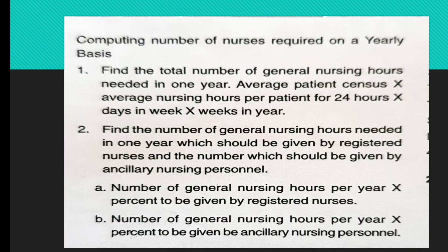Moving to projecting staffing needs: the steps include first identifying the components of nursing care and nursing service; second, defining the standard of care either by type or institution standard; third, estimating the average number of nursing hours needed; and fourth, determining the proportion of nursing hours to be provided by registered nurses versus assistant nurses.